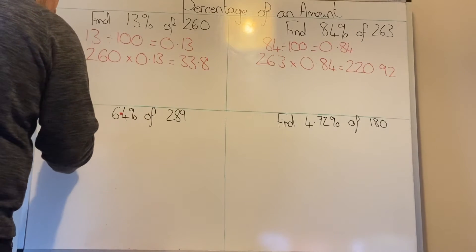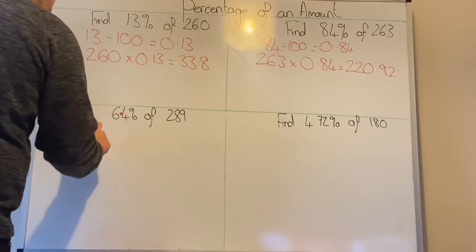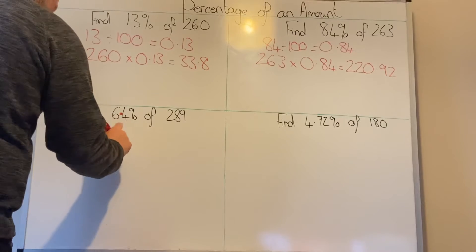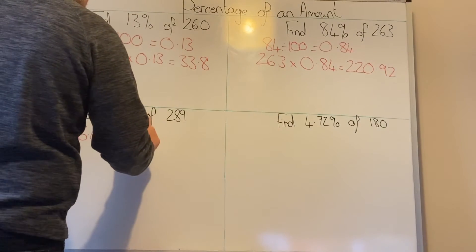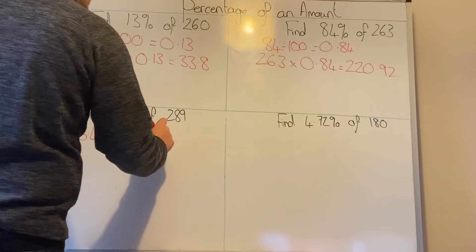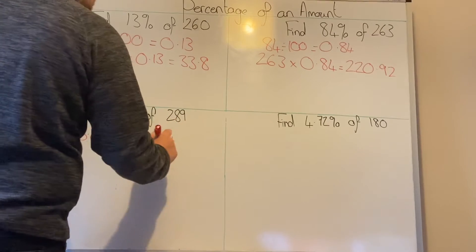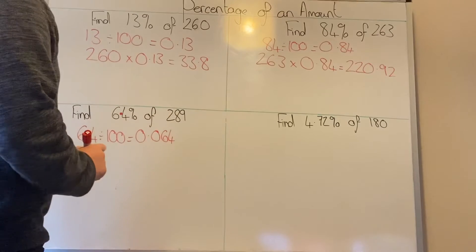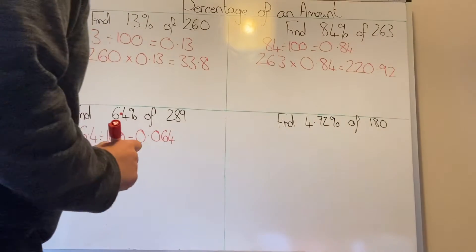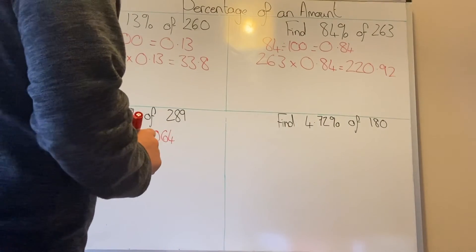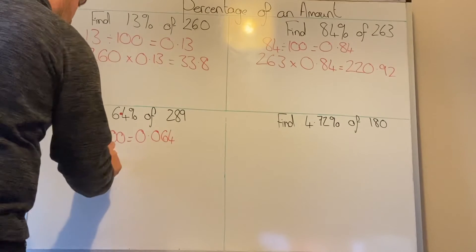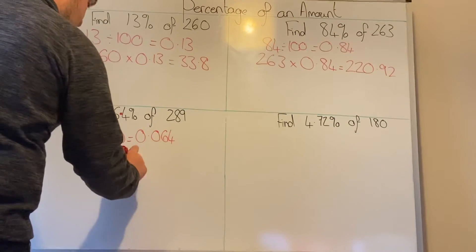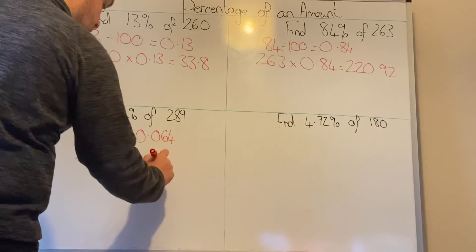So we're going to do 6.4 divided by 100, which equals 0.064. Then you're going to do 289 times by 0.064 and you should get the answer of 18.496.